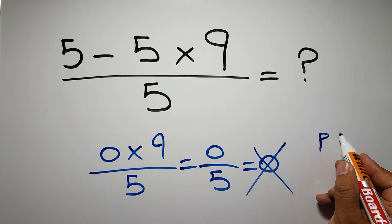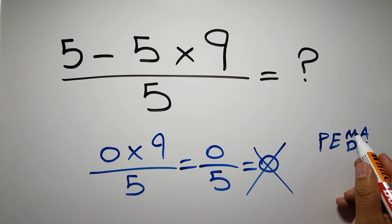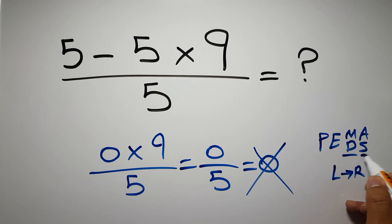Remember that multiplication and division have equal priority, and we have to work from left to right. The same applies to addition and subtraction. So here in the numerator, first we have to do this multiplication, then this subtraction.